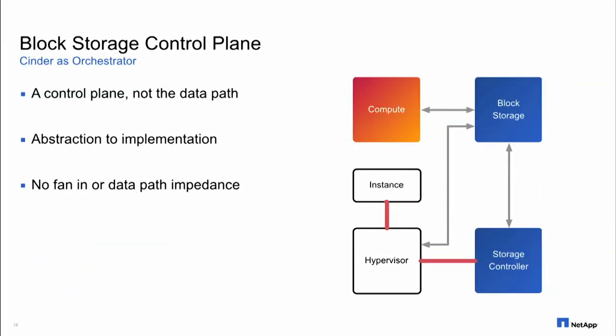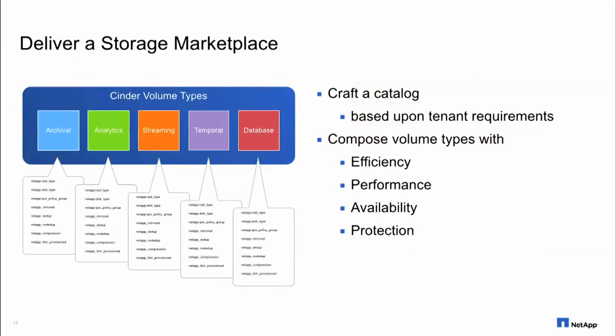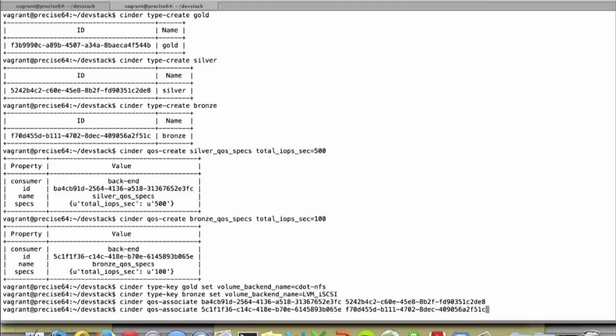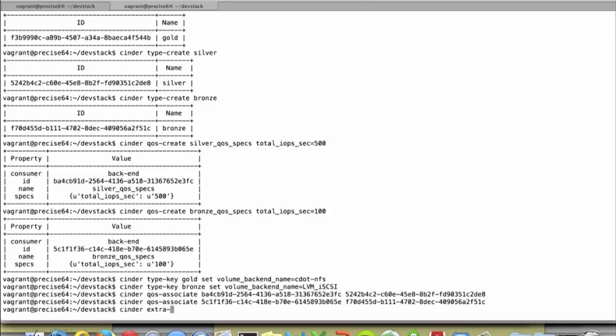On block storage — where we started — this is a control plane activity, not the data path. One of the things we work on in the community is the use of volume types within Cinder, which allows you to construct a catalog of capabilities. You establish a volume type and compose it with volume type extra specs, which are the unique capabilities a given Cinder back-end can deliver. A requester speaks to the API server, and the Cinder scheduler levies the request against the most appropriate back-end given the requested type's characteristics.